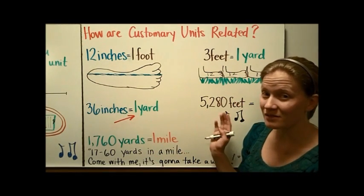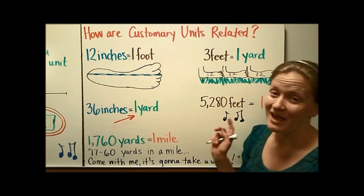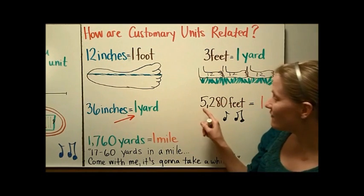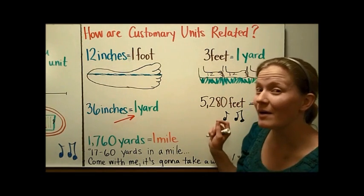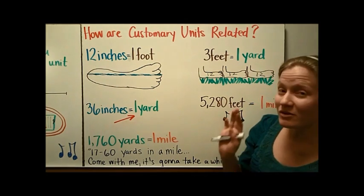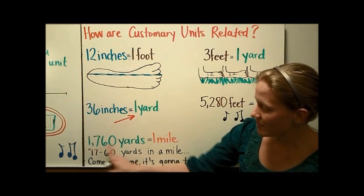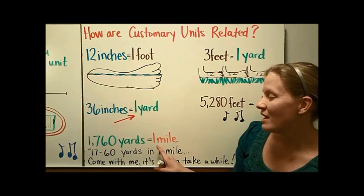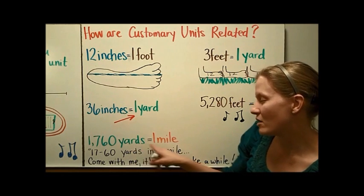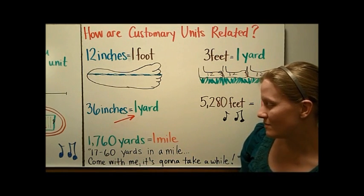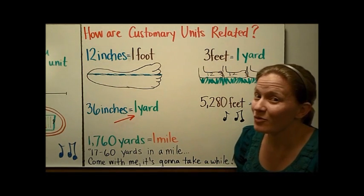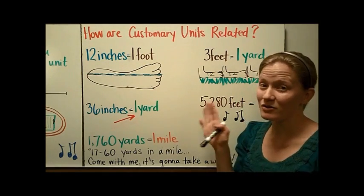And finally, there are 5,280 feet in one mile. Every single time I have to answer that question, I think of this song — it might sound familiar: 5,280 feet in a mile. We also need to know how many yards are in one mile, so I wrote a little rhyme: 1,760 yards in a mile — come with me, it's going to take a while. These rhymes and songs, along with the pictures, will help you remember how the units are related.